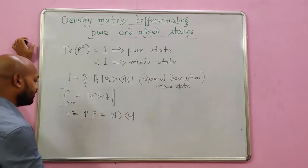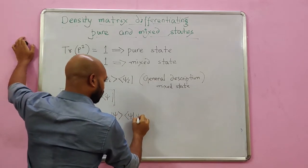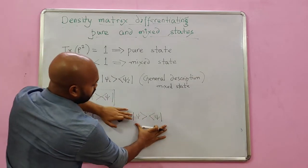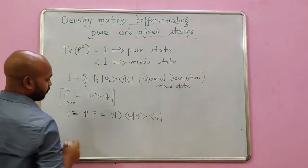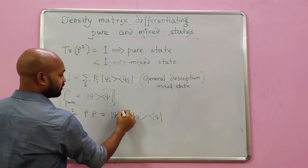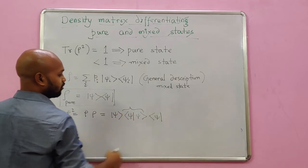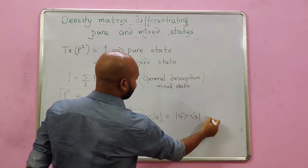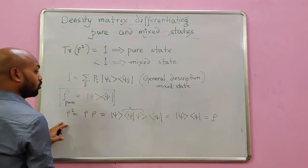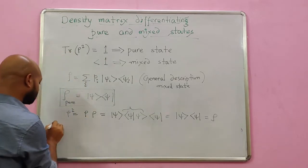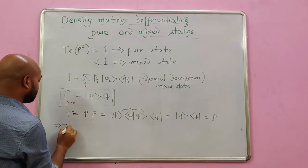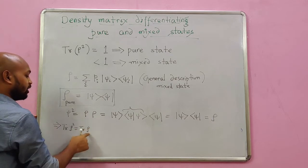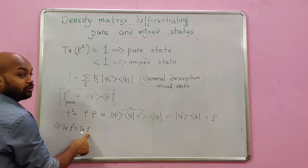This, and then again rho, so this becomes this. This is rho, and this is again rho. Now we know that this is the inner product, which gives you a 1, and then we are left with psi side, which is rho. So rho squared equals to rho, that means trace of rho squared equals to trace of rho.